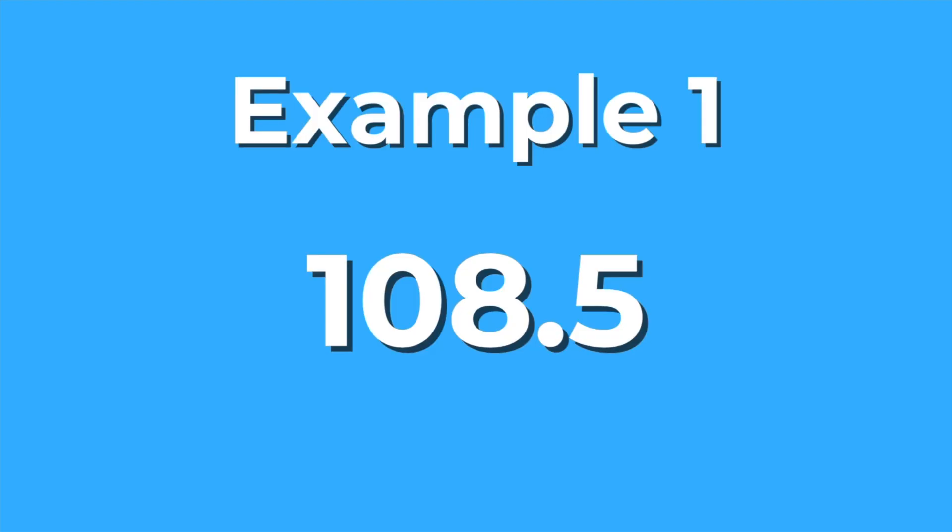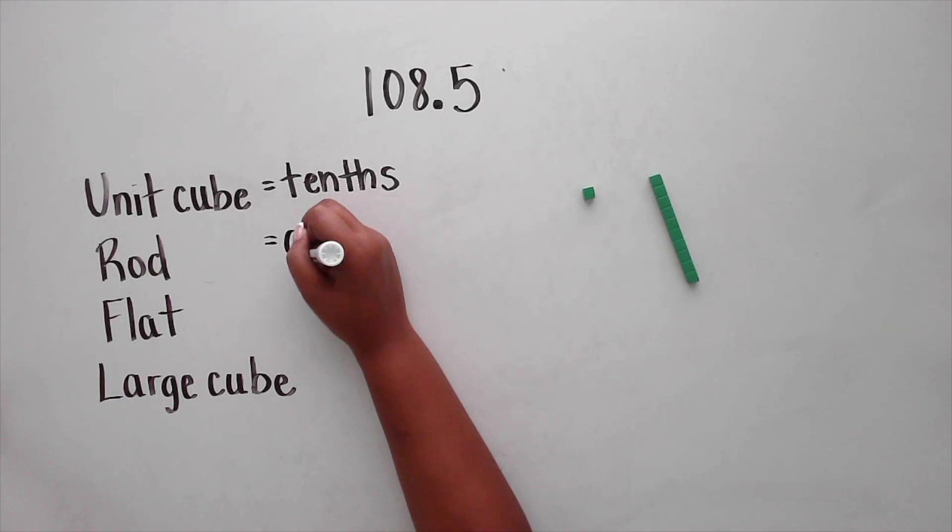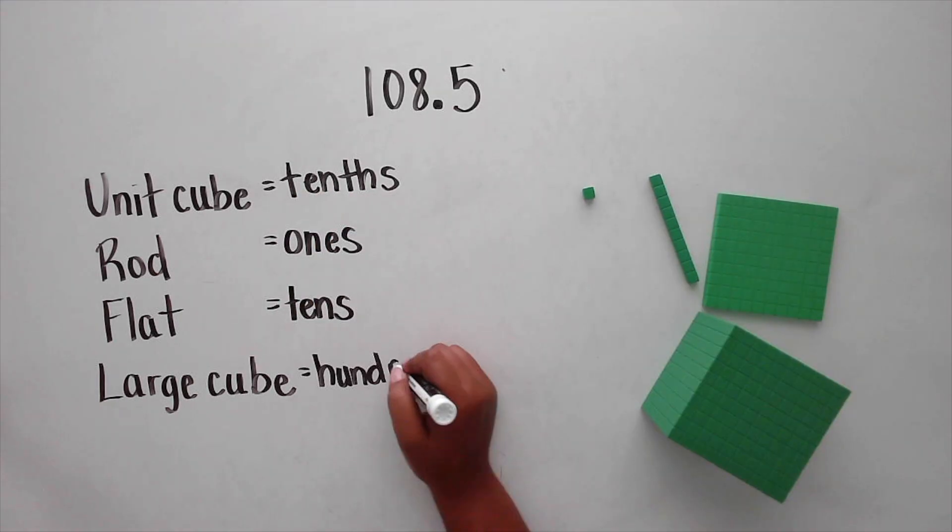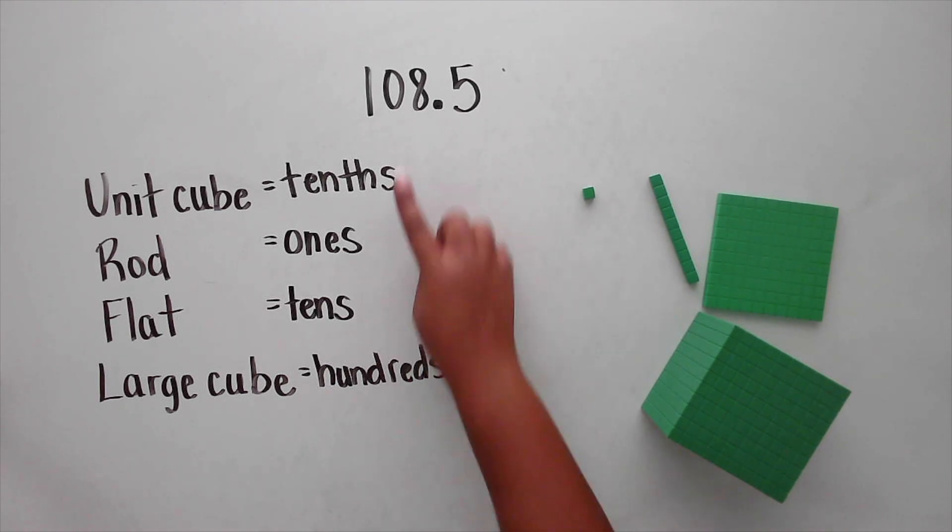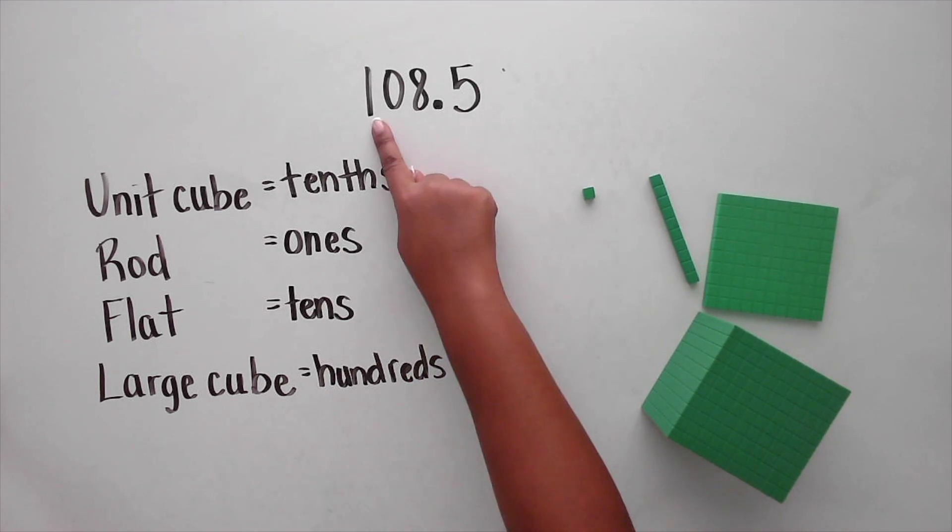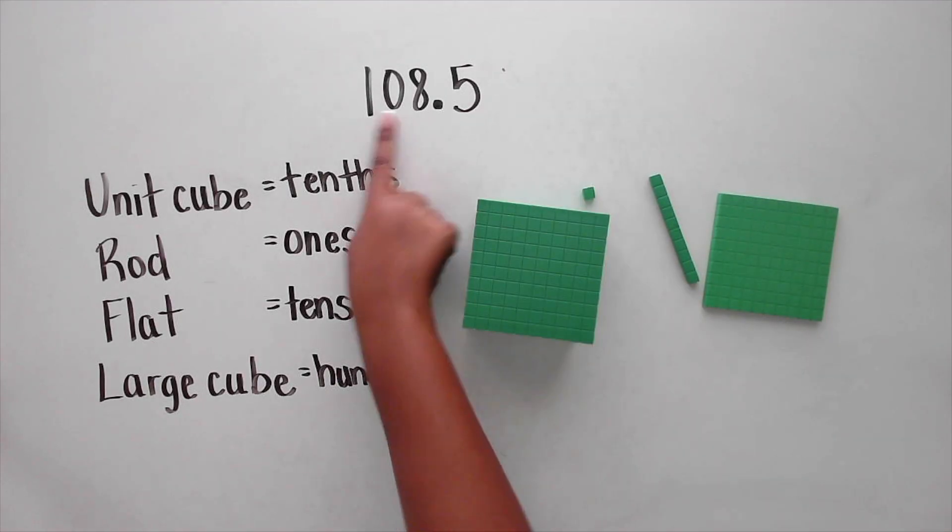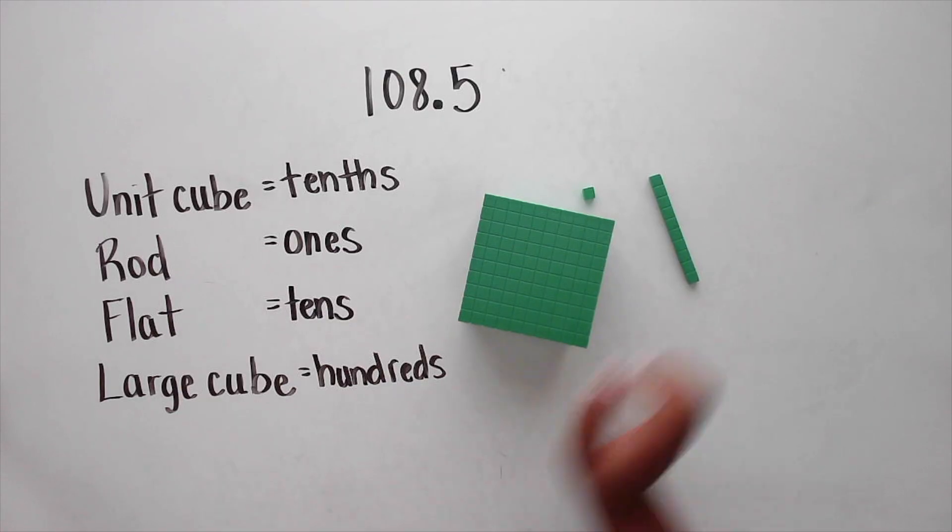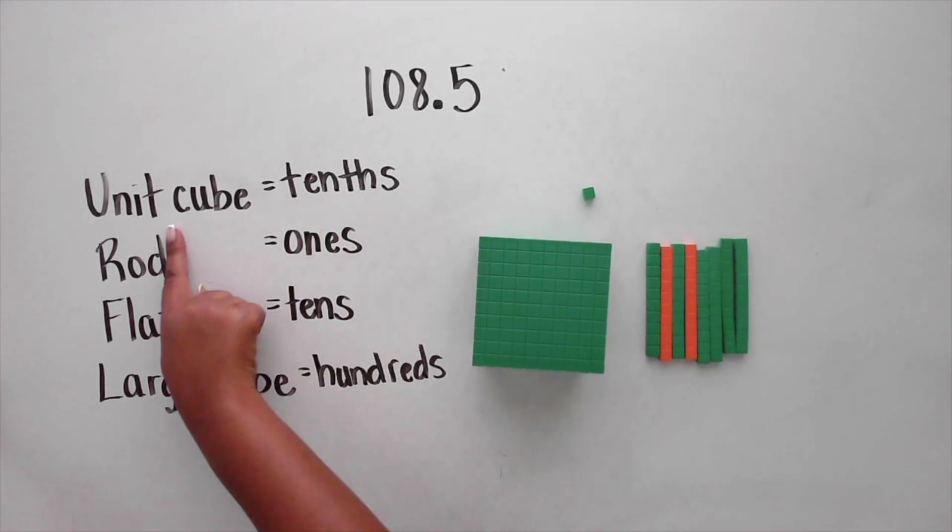In our first example, 108 and 5 tenths, we'll make the unit cube represent tenths. Rod represents ones, the flat represents tens, and a large cube can represent hundreds. 108 and 5 tenths has 100, 0 tens, 8 ones, and 5 tenths.